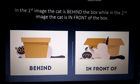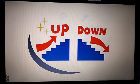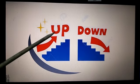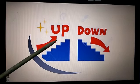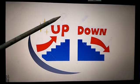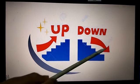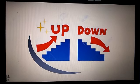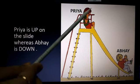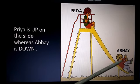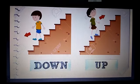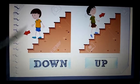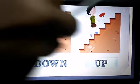Now moving to our next position word, that is up and down. The arrowhead which is pointing towards the sky is up while the arrowhead which is pointing towards the ground is down. In the first image, the boy is coming down the stairs, whereas in the second image, the boy is climbing up the stairs.